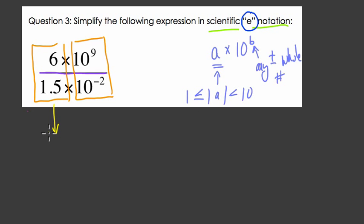So 6 divided by 1.5, if we're overwhelmed by that, multiply both by 10. 6 divided by 1.5 is equivalent to 60 over 15. And 15 goes into 60 evenly, it goes into it 4 times. So this quotient, this first part here, is just 4.